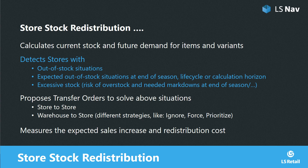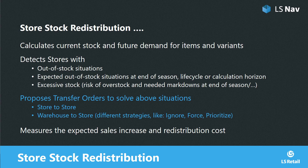When we have categorized the stores into stores with demand and stores with supply, we proceed to the next step. The system proposes transfer orders to move items to stores that have demand. Those transfers are usually between stores, but you can also include warehouse locations with different strategies like ignore, force, or prioritize. Most importantly, we measure the expected sales increase and compare this with the redistribution cost — the cost of transportation between stores or warehouse locations — so you can always see if it's economically wise to transfer the items or keep them where they are.